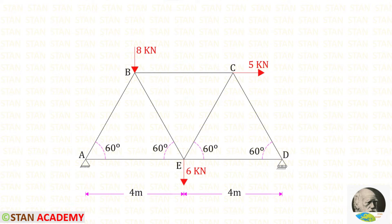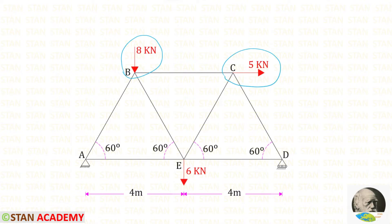At point B, we have a vertical point load of 8 kN acting downwards. At point C, there is a horizontal load of 5 kN acting towards the right side. And at point E, there is a vertical load of 6 kN acting downwards.